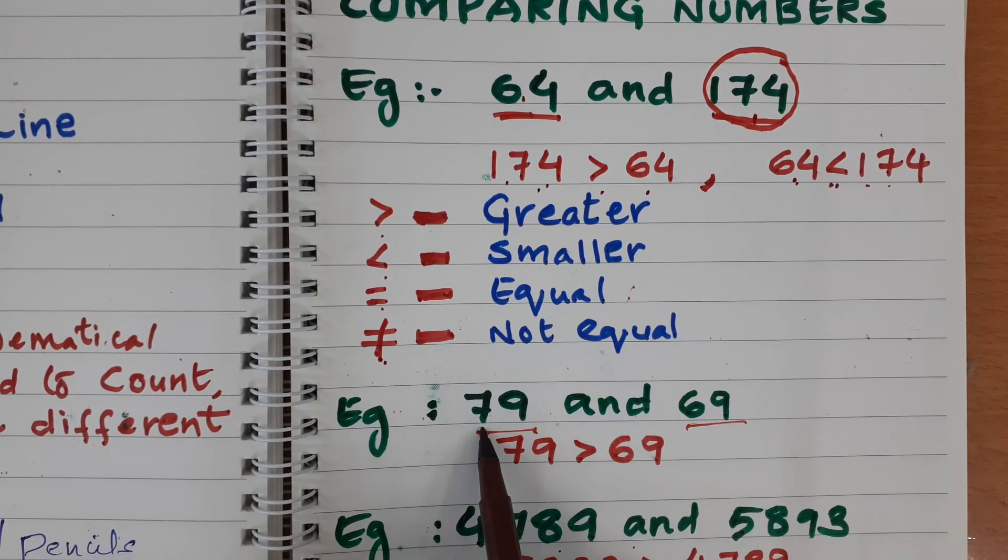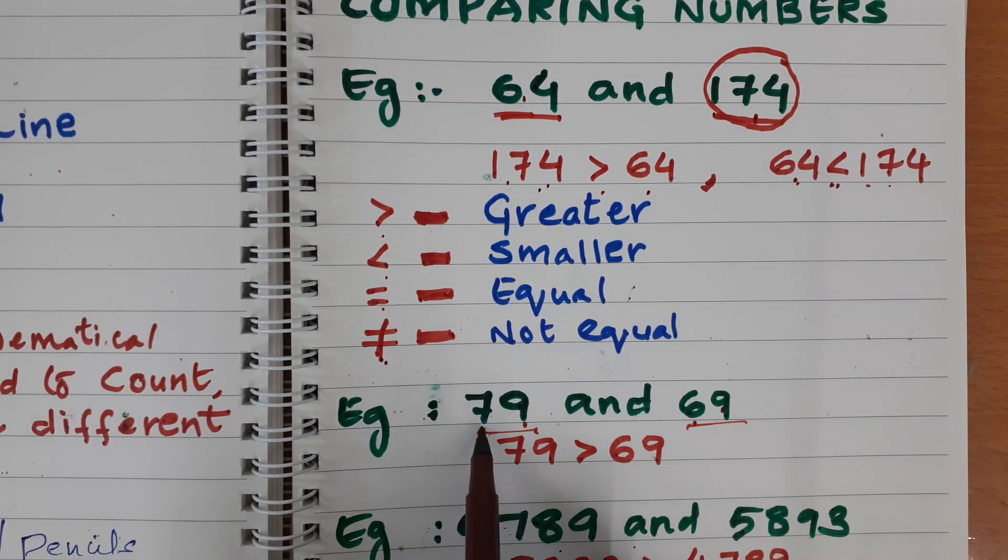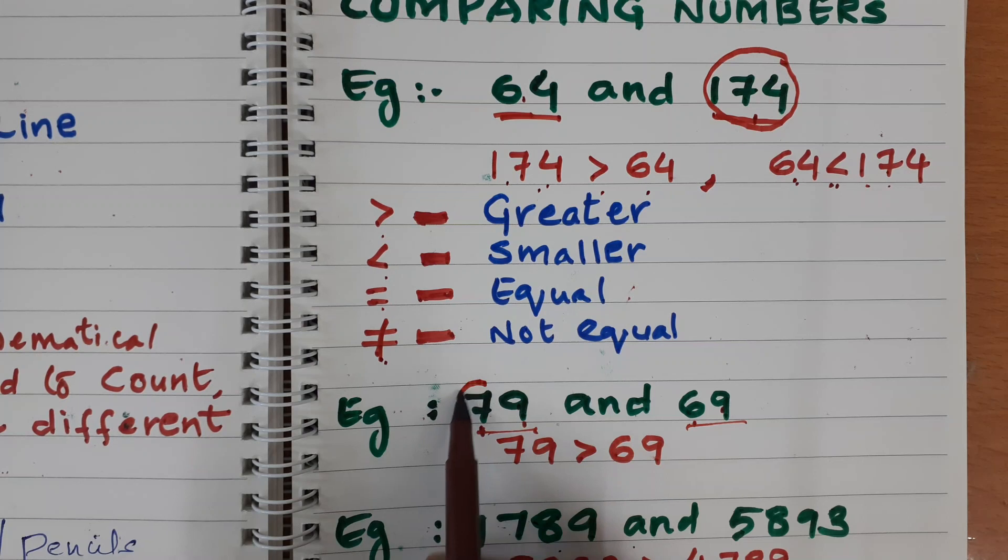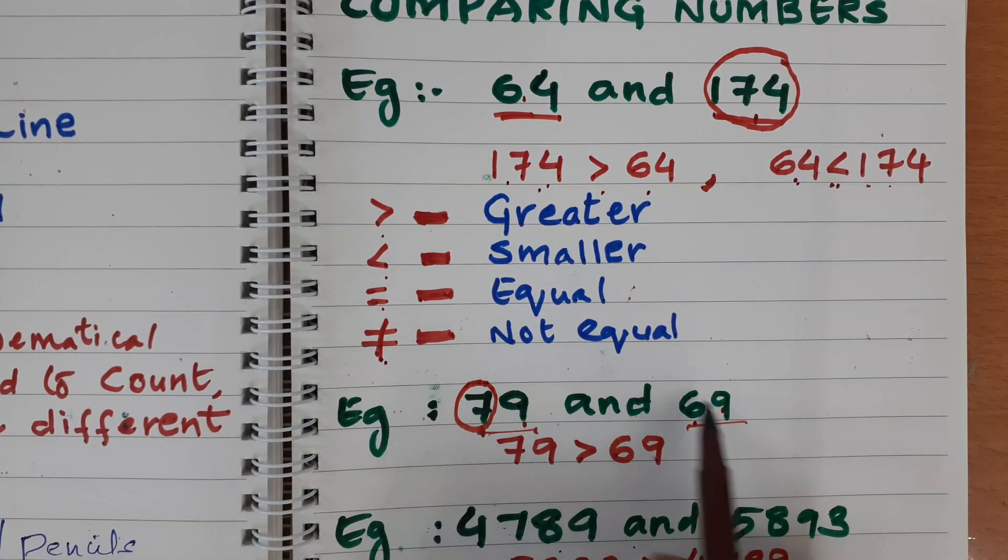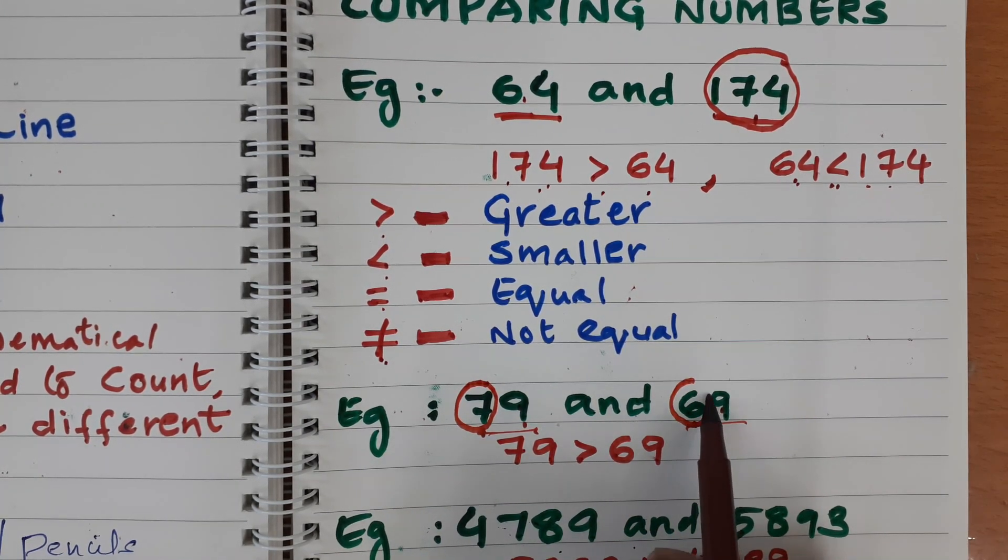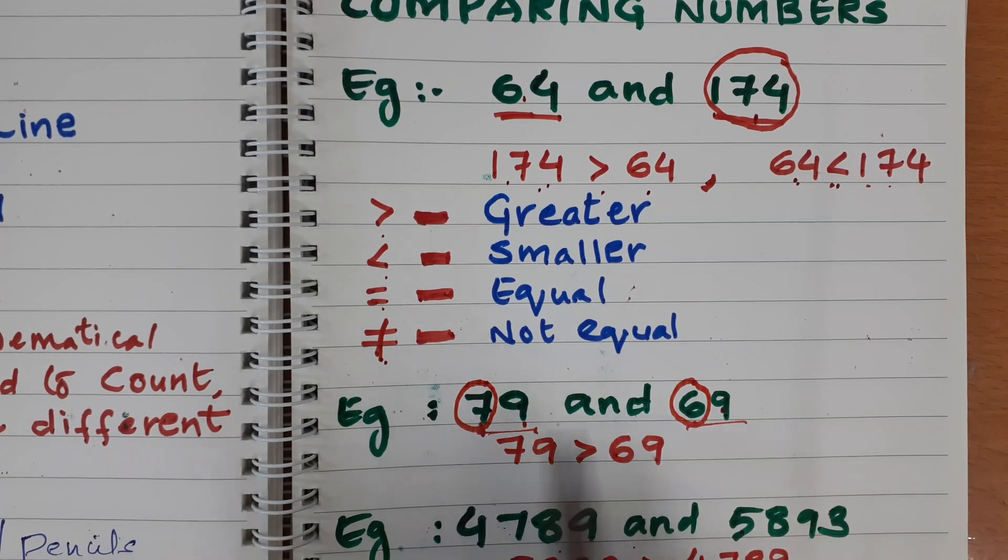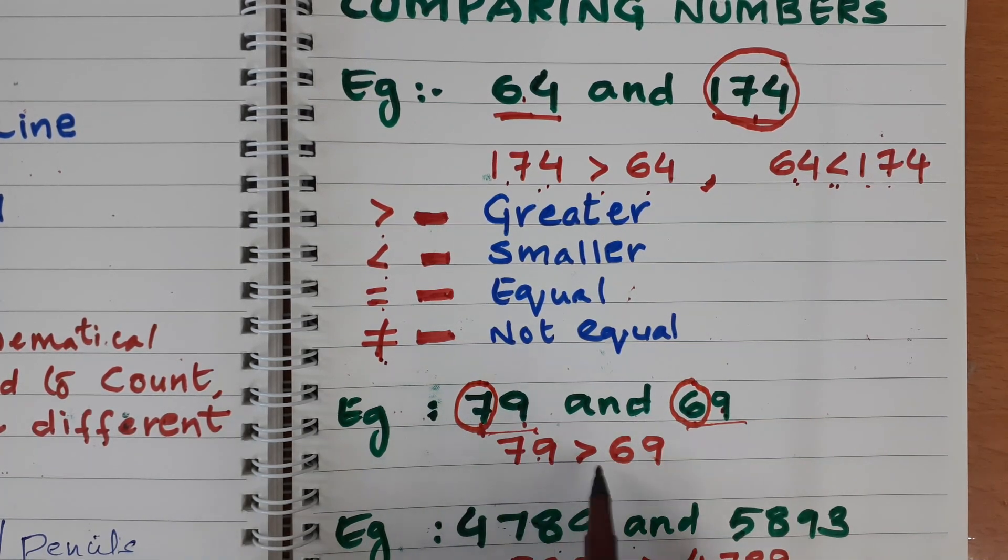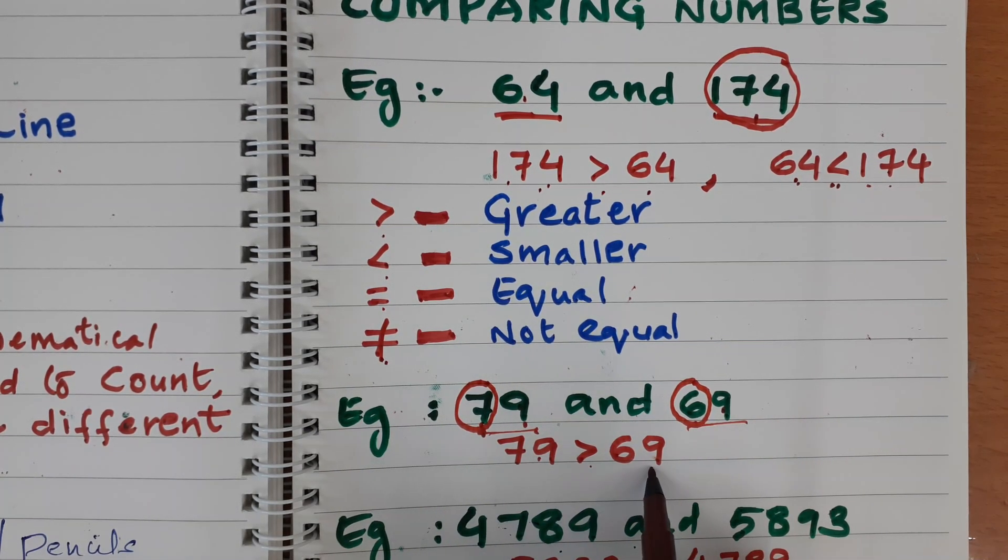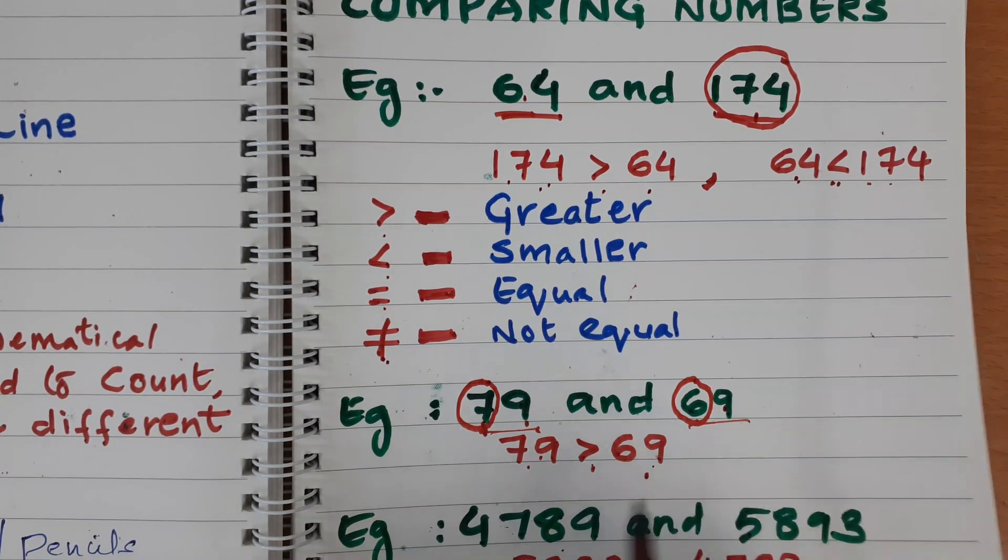Then how we can say which number is greater? If you read this number, 79, then when you look for the 10th place, here we have 7, but here we have 6. So of course, 7 is bigger than 6. So 79 is bigger than 69. 79 greater than 69.